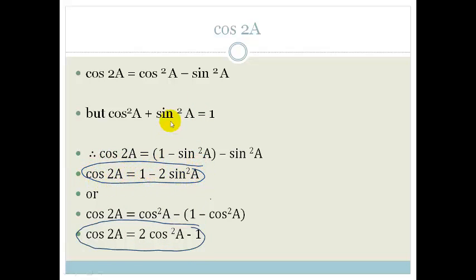and this option here, which is equal to cos²A minus sin²A. So these are your three options for what your double angle of cos 2A can equal.